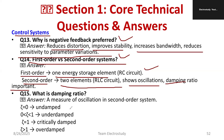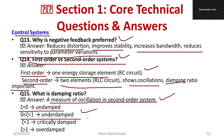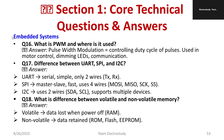What is damping ratio (zeta)? It is the ratio of actual damping to critical damping, measuring oscillation in a second-order system. If zeta equals zero: undamped system. If zeta is between zero and one: underdamped. If zeta equals one: critically damped. If zeta is greater than one: overdamped.